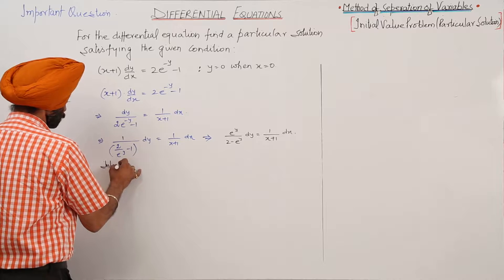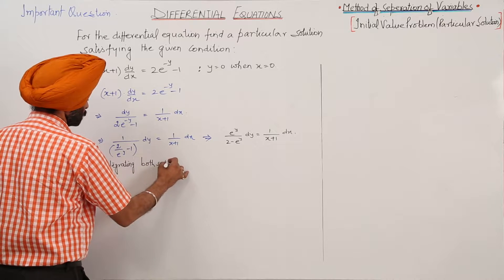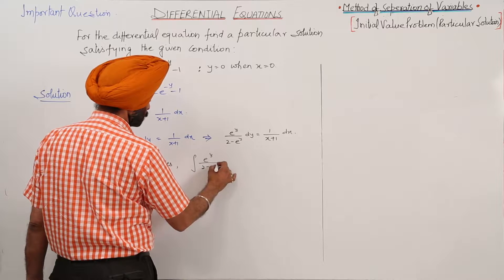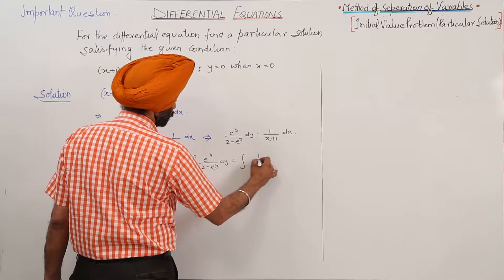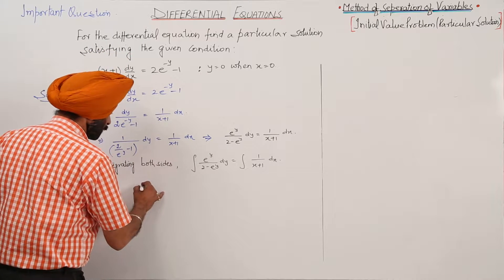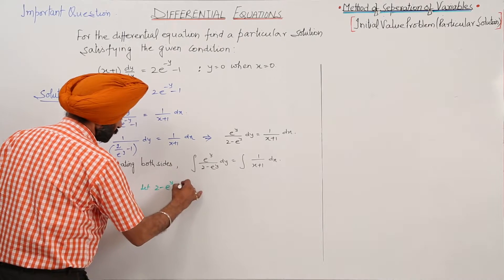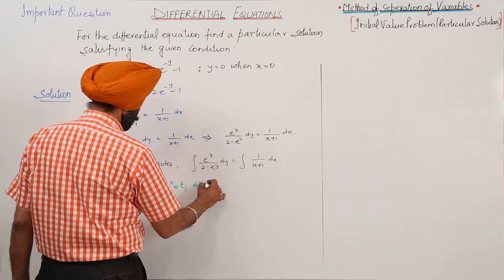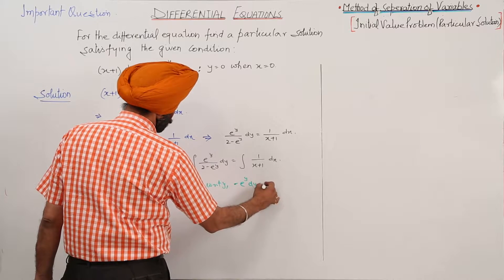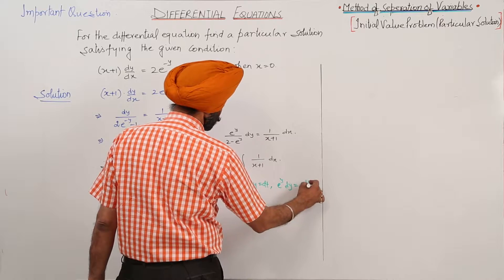Integrating both sides: integration of e^y upon (2 minus e^y) dy. Now, let t = 2 minus e^y. Differentiating with respect to y, we get negative e^y dy equal to dt, or e^y dy is equal to negative dt.